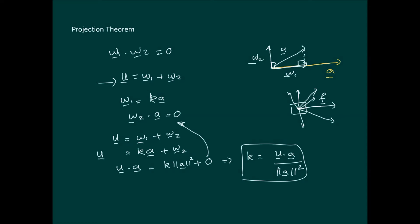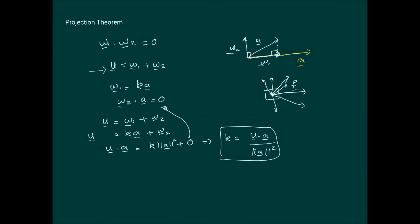U and a are known to us, so we've figured out what k is, and if we know k, we've also figured out what w1 is. We call that the projection of u onto a — written as proj_a u — and it is defined as (u dot a) divided by the norm of a squared, multiplied by the vector a. Notice that (u dot a) divided by the norm of a squared is a scalar quantity, so the result proj_a u is a vector overall.